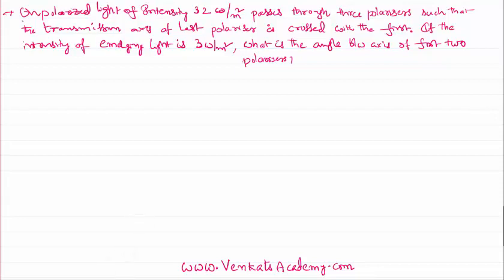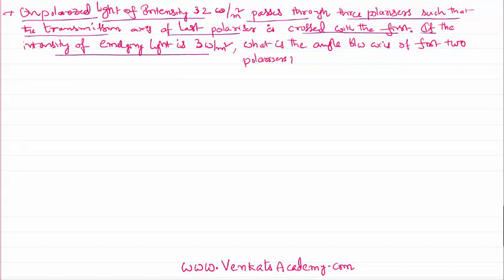It is given that unpolarized light of intensity 32 watt per meter square passes through three polarizers such that the transmission axis of the last one is crossed with the first one. If the intensity of the emerging light is 3 watt per meter square, what is the angle between the first two polarizers' axis?